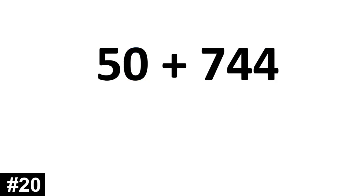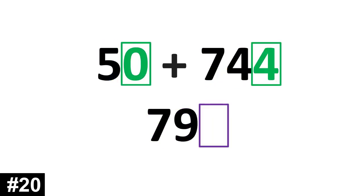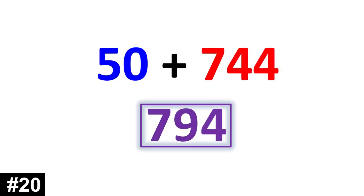50 plus 744. We have 5 tens plus 74 tens. 5 plus 74 is 79. We add the ones. 0 and 4 gives us 4. 794.